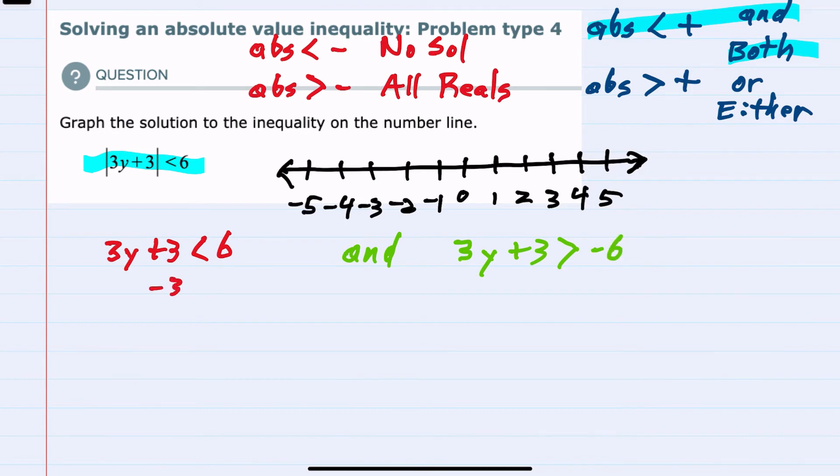On the left, subtracting the 3 gives us 3y is less than 3. And dividing on both sides has the y by itself less than 1. So graphing that, we would have everything to the left of 1. But then for the equation on the right-hand side,